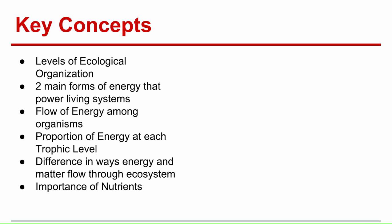Alright, some key concepts to take away from this lesson are the levels of ecological organization, the two main forms of energy that power living systems, the flow of energy among organisms, the proportion of energy at each trophic level, and the different ways energy and matter flow through the ecosystem and the importance of nutrients.